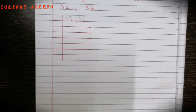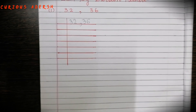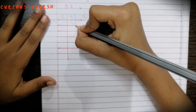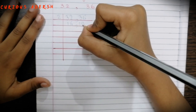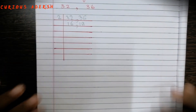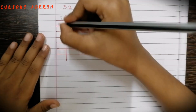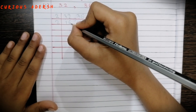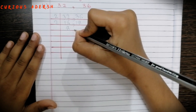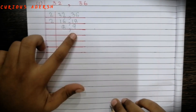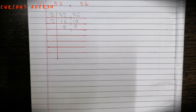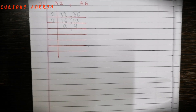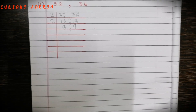Is 32 and 36 divisible by 2? Yes. 16 and 18 are divisible by 2. Are 8 and 9 divisible by 2? No. Only 8 is divisible by 2, so we'll divide 8 and write 9 as it is.